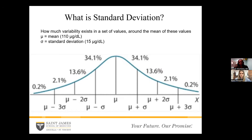68% of your values will be within one standard deviation — using the numbers in this question, that would be between 95 and 125. 95% is within two standard deviations, so 95% of patients would fall between the values of 80 and 140. And three standard deviations is going to be 99.7%, which would be plus or minus 45 from 110.